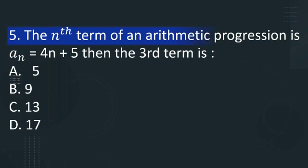If nth term of an arithmetic progression a_n is equal to 4n plus 5, then the third term is, you already guessed it, very easy question. Option A: 5, option B: 9, option C: 13, option D: 17.